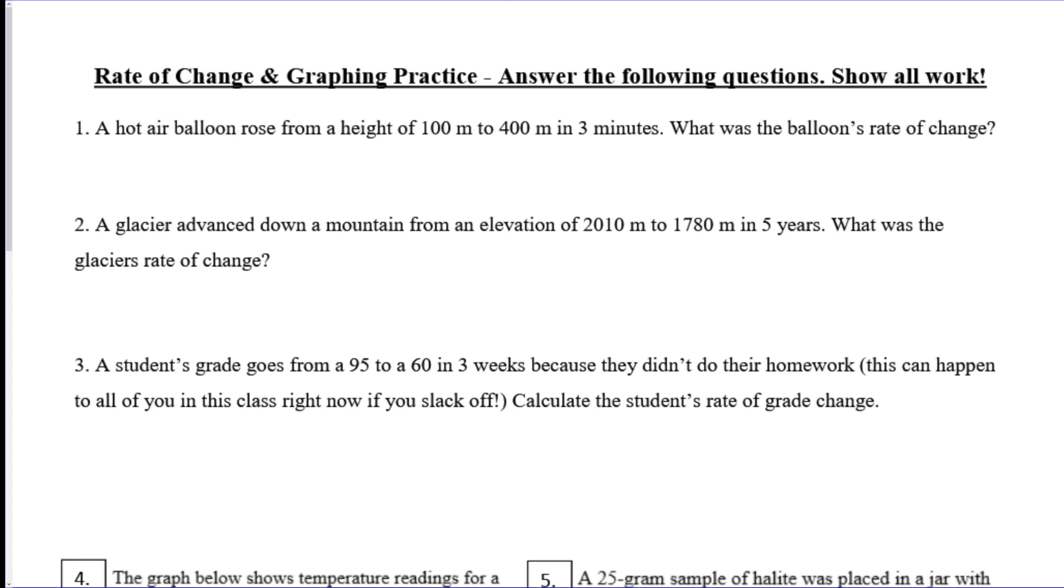Rate of change: you should definitely know how to calculate rate of change. So you want to do change in value over time. So for this question here, 400 minus 100 is your change in value, so that's 300 meters, divided by three minutes, so you would get 100 meters per minute. And make sure you have your correct unit for that.